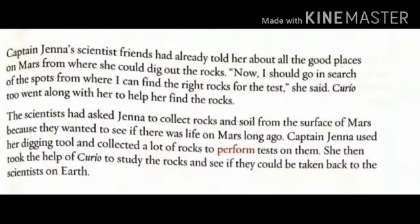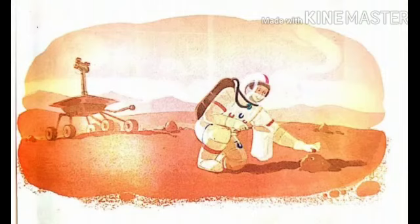Captain Gina's scientist friends had already told her about all the good places on Mars from where she could dig out the rocks. 'Now I should go in search of the spots from where I can find the right rocks for the test,' she said. Curio too went along with her to help her find the rocks. Her scientist friends had told her where to find good soil to carry back to planet Earth for other scientists to study, and robot Curio also went to help her.